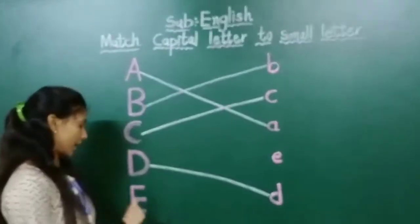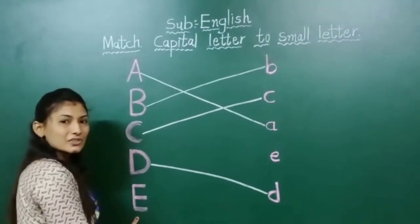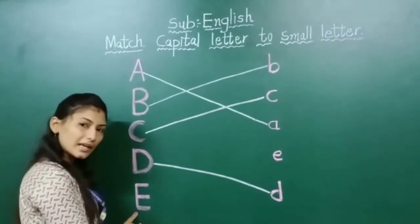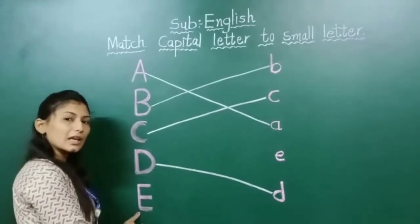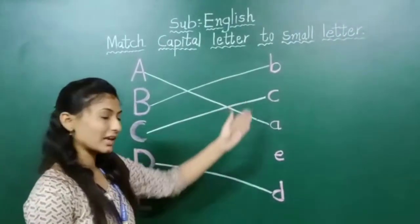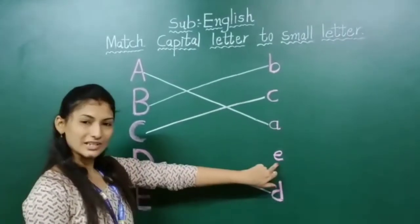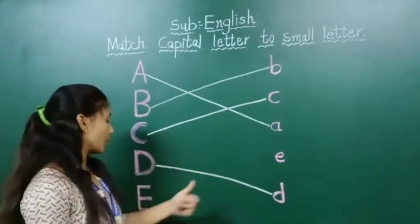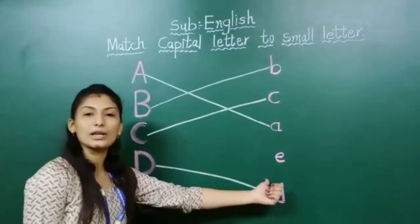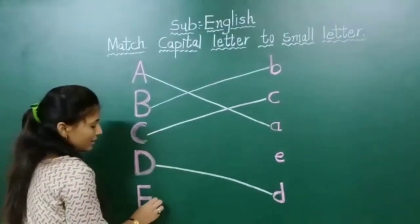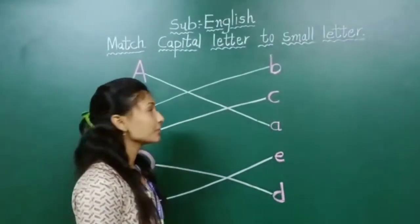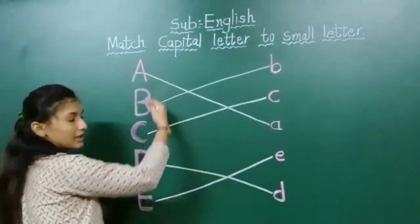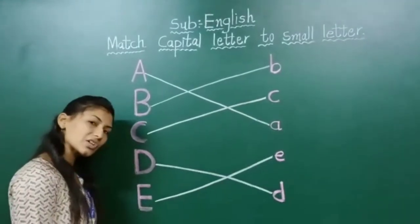समझ में आया? Now next — which letter is this? Capital letter E. Find here — where is small letter E? You have to learn small letter E. This one — small letter E. Capital letter E, small letter E — match it. Match capital letter to small letter — what do we do? Match it.